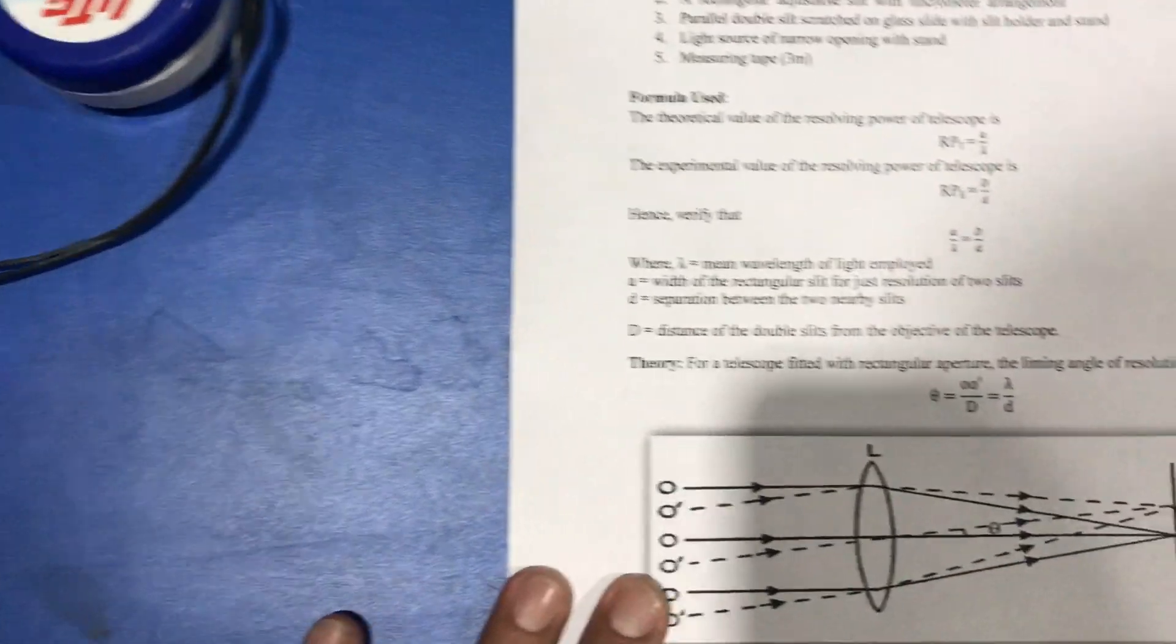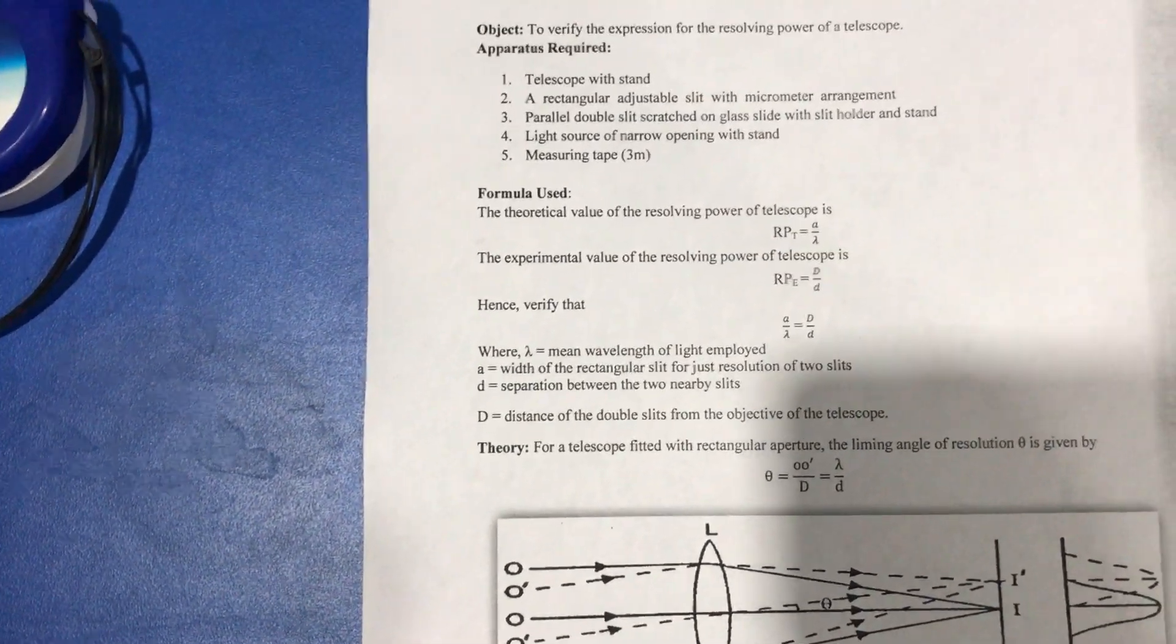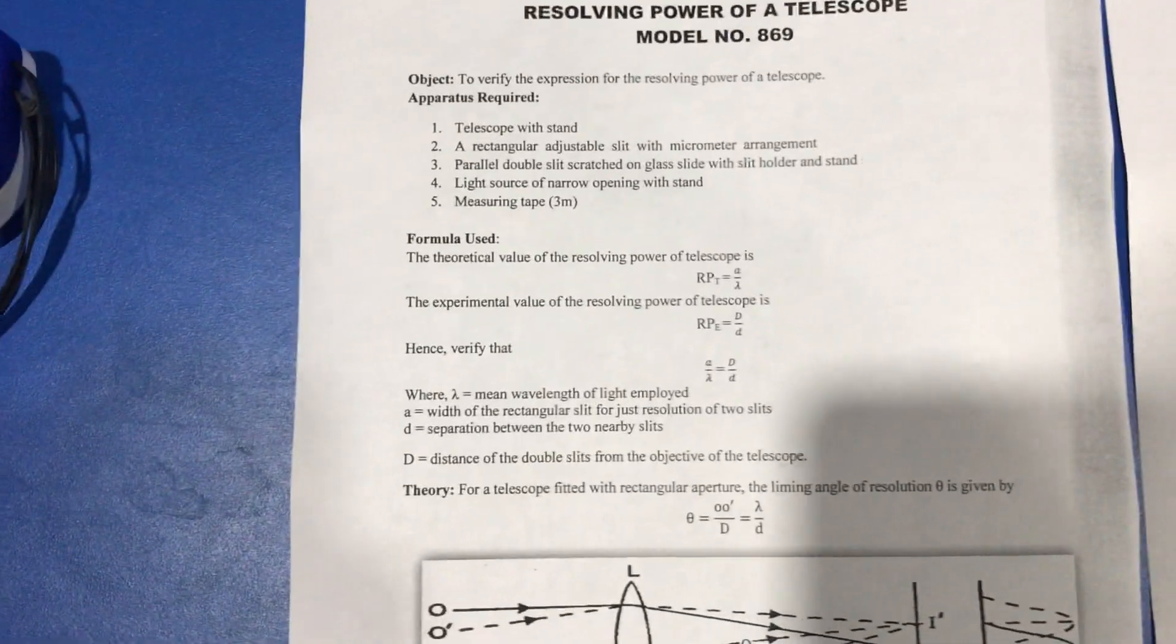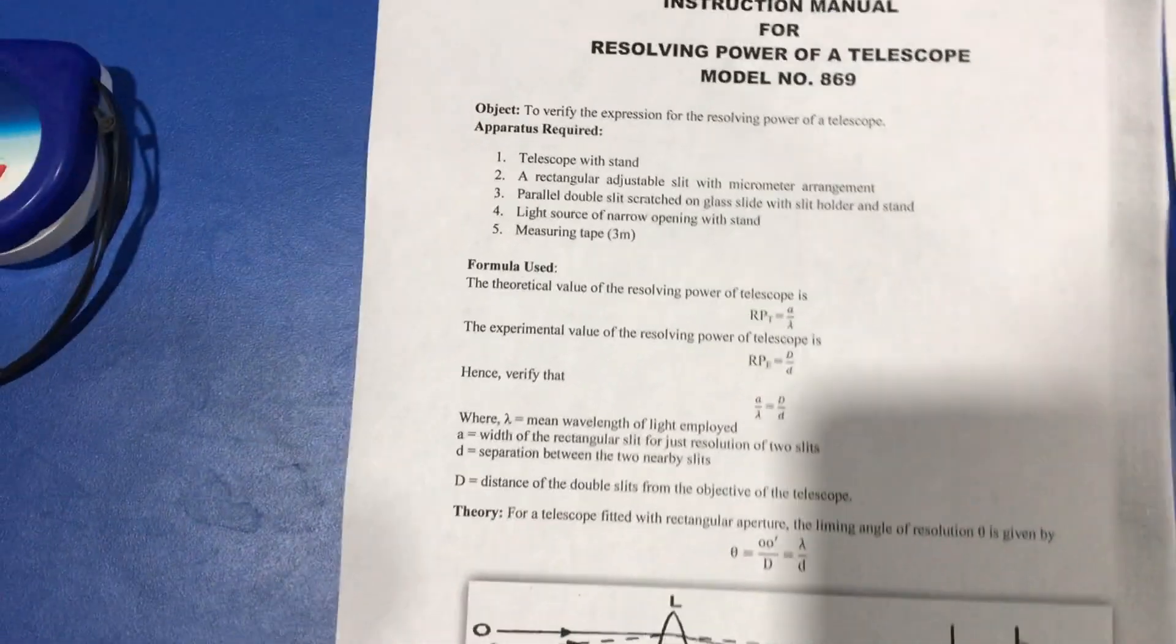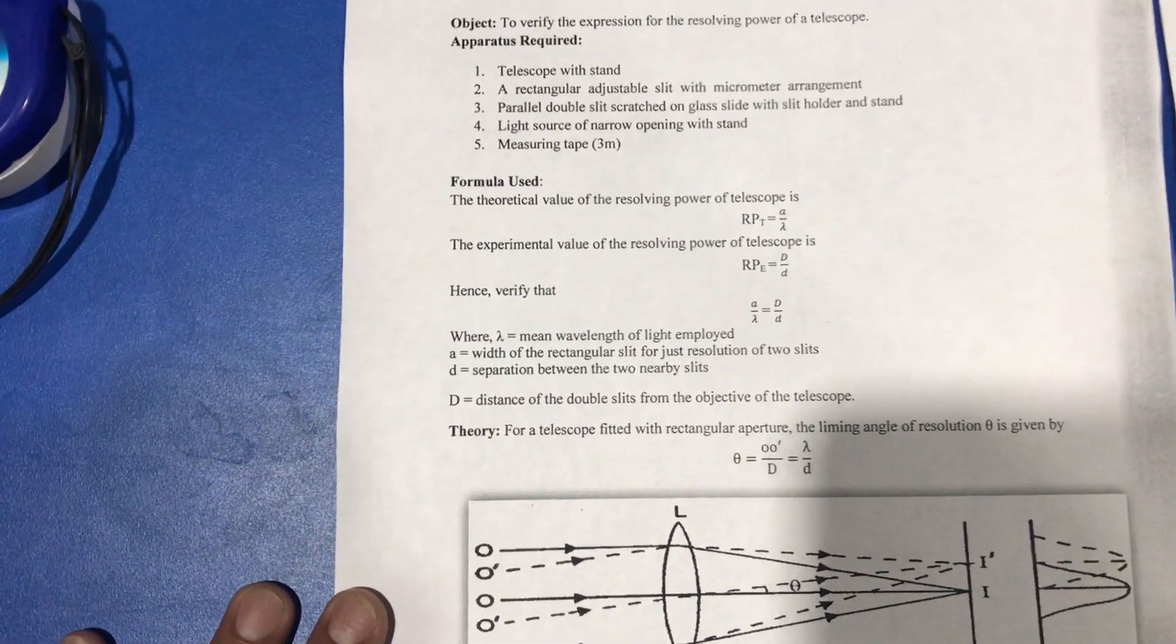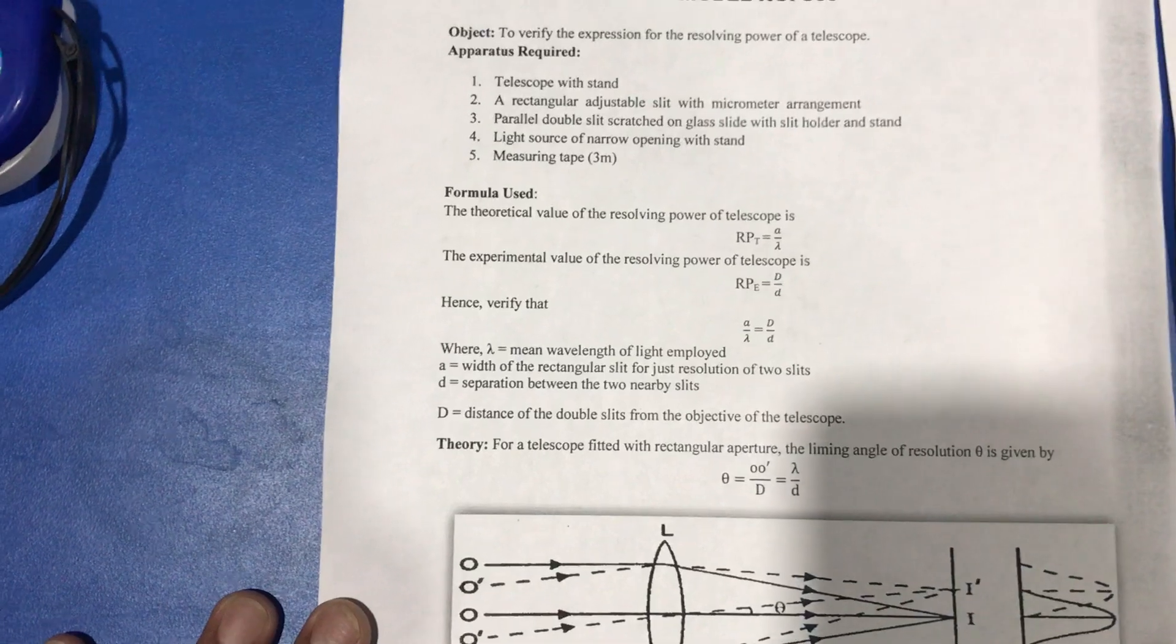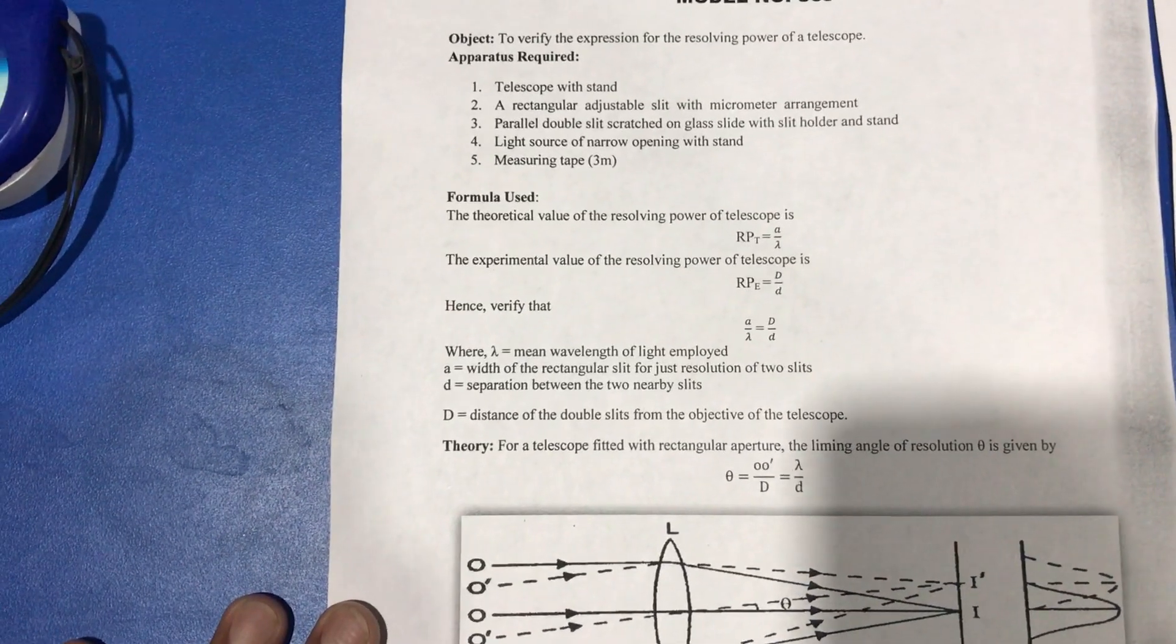Lambda (λ) is the wavelength of light used, which is approximately 550 angstroms. 'a' is the width of the rectangular slit for just resolution, and 'd' is the separation between the double slits.